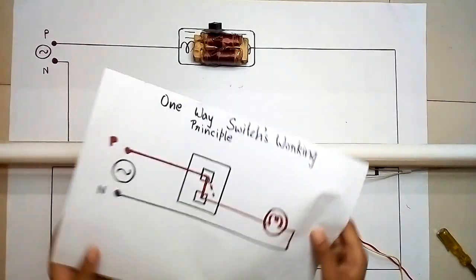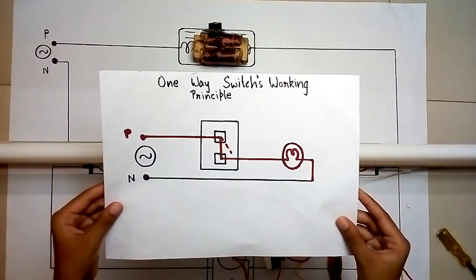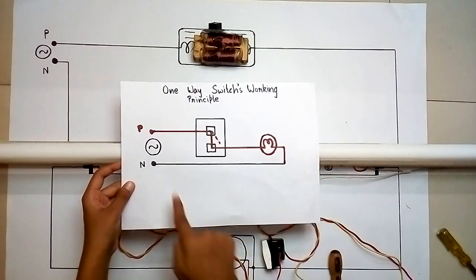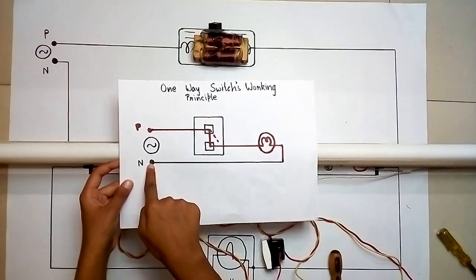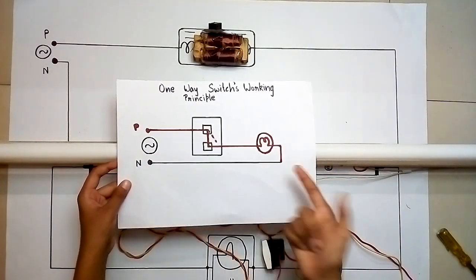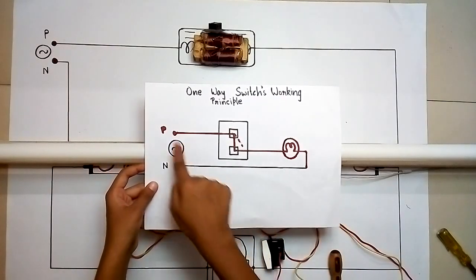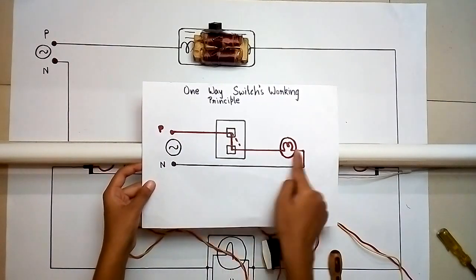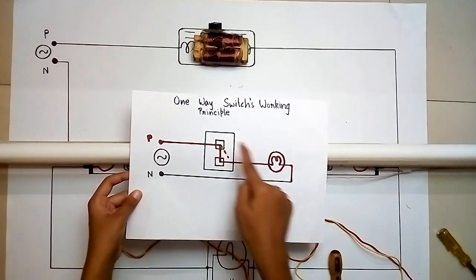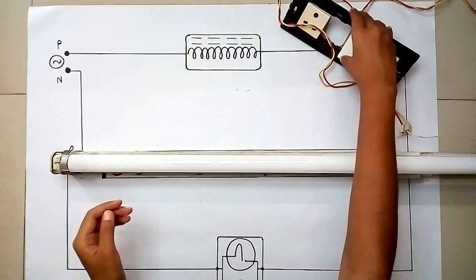Here is the circuit diagram of a one-way switch. The neutral wire is directly connected to the fluorescent lamp from the AC power supply, and the phase wire is cut into two parts — one part inserted into one terminal of the switch and the other part into the other terminal of the switch.